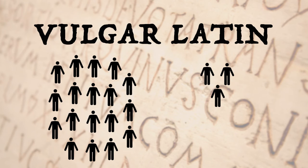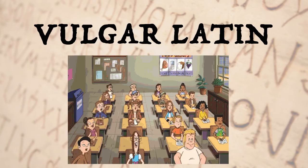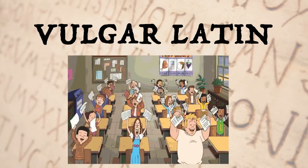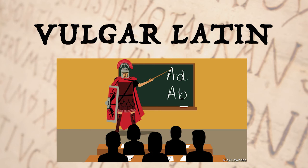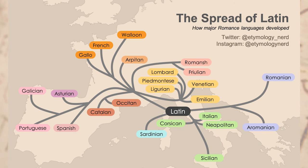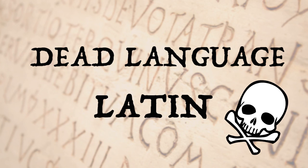There are very few people in the modern world who can speak and converse fluently in Latin. However, because many schools teach Latin to their students, there are a few million people who can read or understand the language to some extent. The languages derived from Latin are known as Romance languages, mostly derived from Vulgar Latin. The most prominent Romance languages include French, Spanish, Portuguese, and Italian.